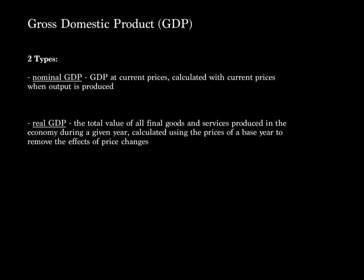Now, there are two types of GDP: nominal and real. Nominal GDP is GDP at current prices, calculated with current prices when the output is produced. On the other hand, real GDP is the total value of all final goods and services produced in the economy during a given year, calculated using the prices of a base year to remove the effects of price changes. So essentially, nominal is in current prices, and real accounts for inflation.